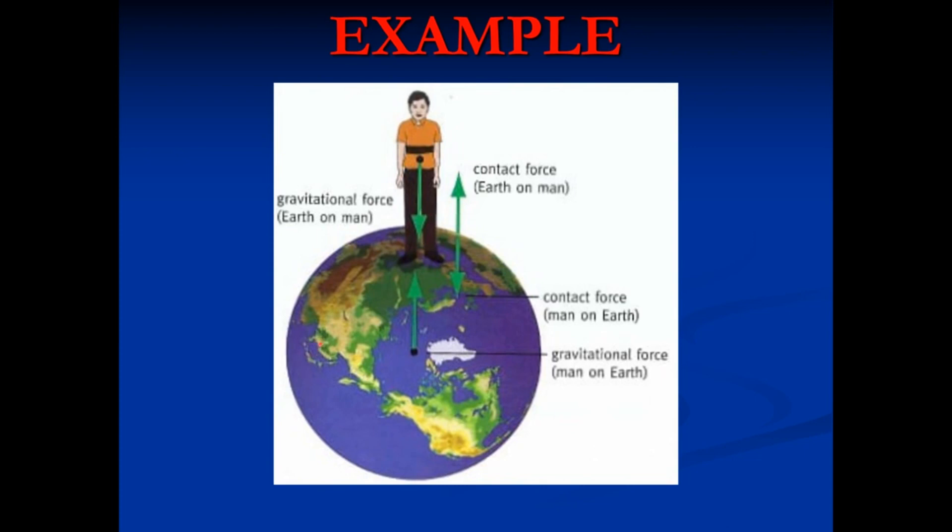This person is standing on the earth's surface. The two gravitational forces are a Newton's third law pair as are the two contact forces. This is contact force which earth exerts on man, this is contact force which man exerts on earth, and this is gravitational force which man exerts on earth, and this is gravitational force which earth exerts on man in the downward direction. So kindly do not be misled into thinking that the person's weight and the contact force of the floor are Newton's third law pair. Although they are equal and opposite, they do not act on different objects and are not of the same type.